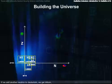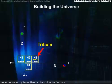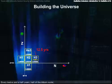If we add another neutron to deuterium, we form tritium, yet another form of hydrogen. However, this is where the fun starts. Every twelve and a half years, half of the tritium nuclei will spontaneously convert themselves to helium-3, a rare but naturally occurring form of helium.